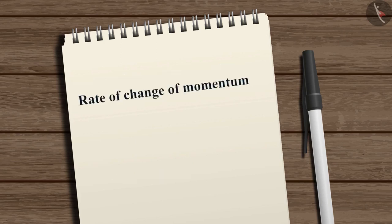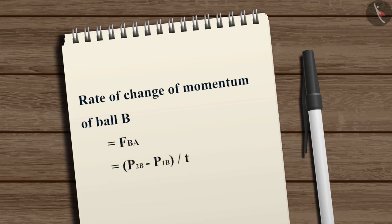In the same way, we can say the rate of change of momentum of ball B, which is equal to FBA, is equal to (P2B minus P1B) divided by T. During the collision, this equals MB multiplied by (VB minus UB) divided by T.